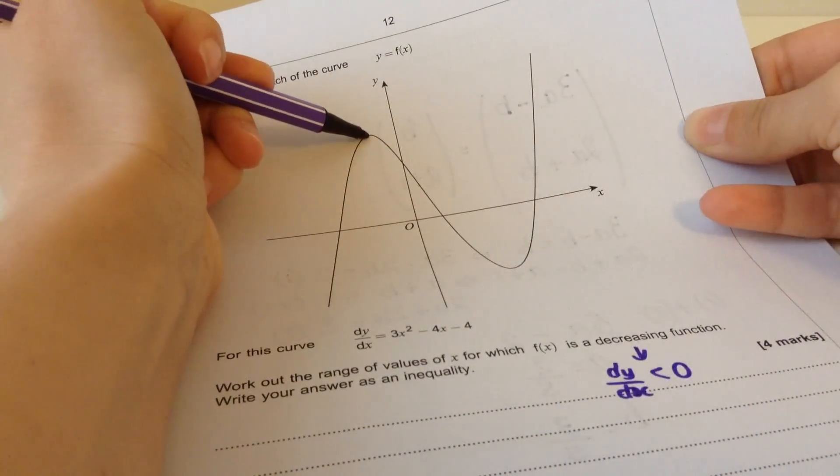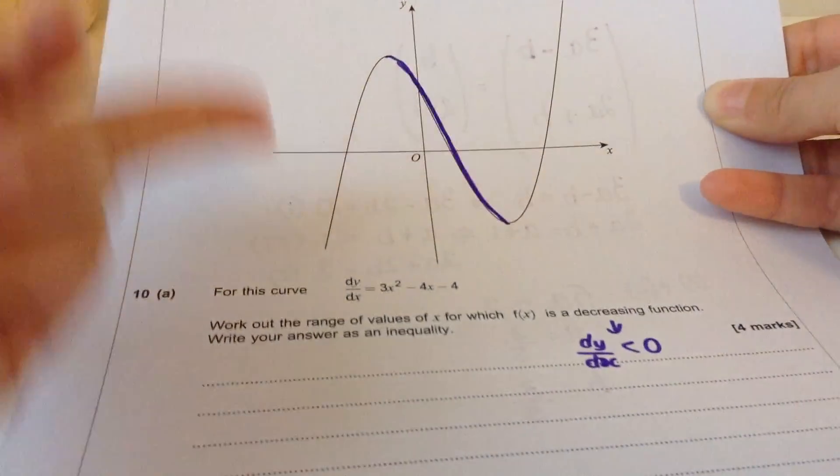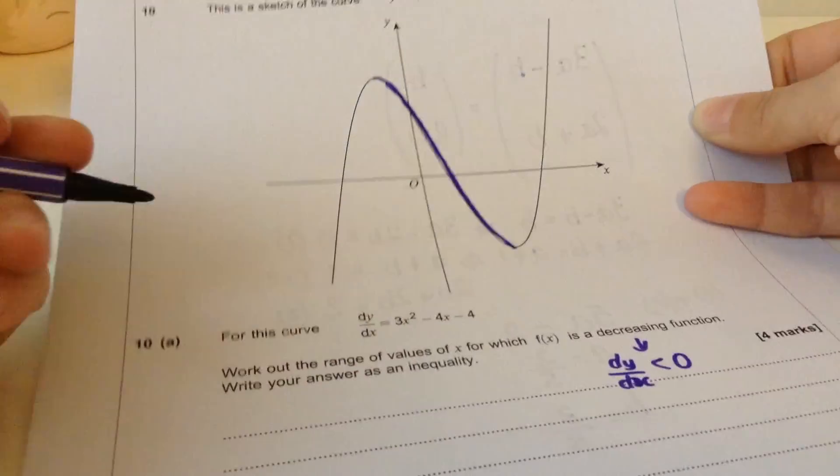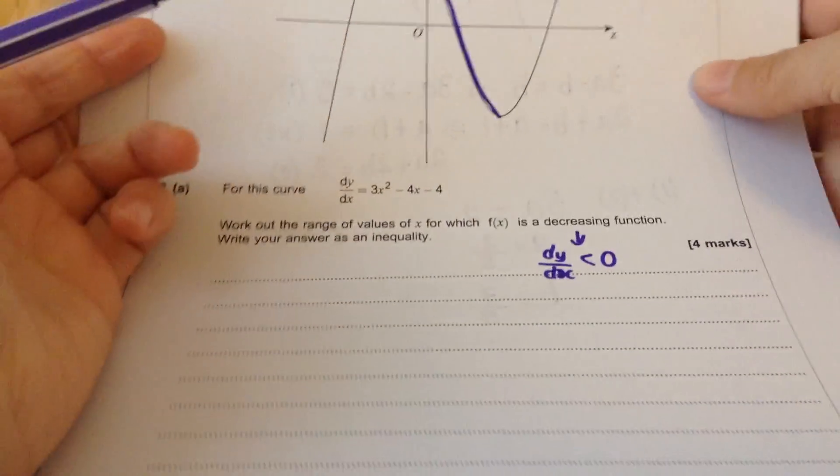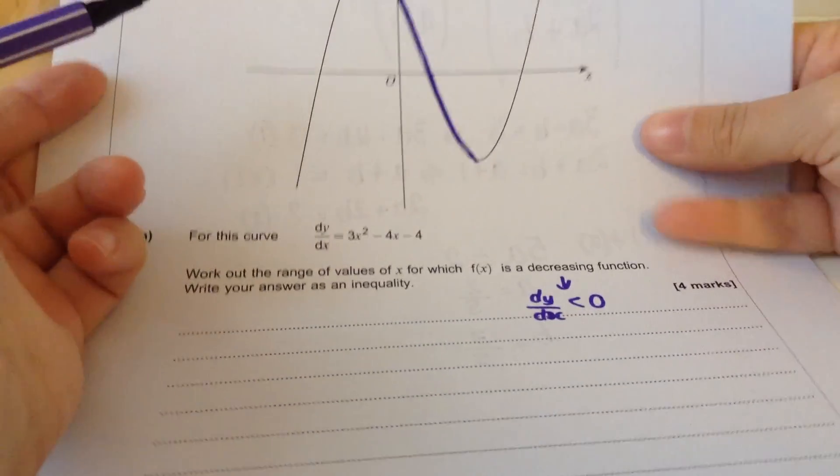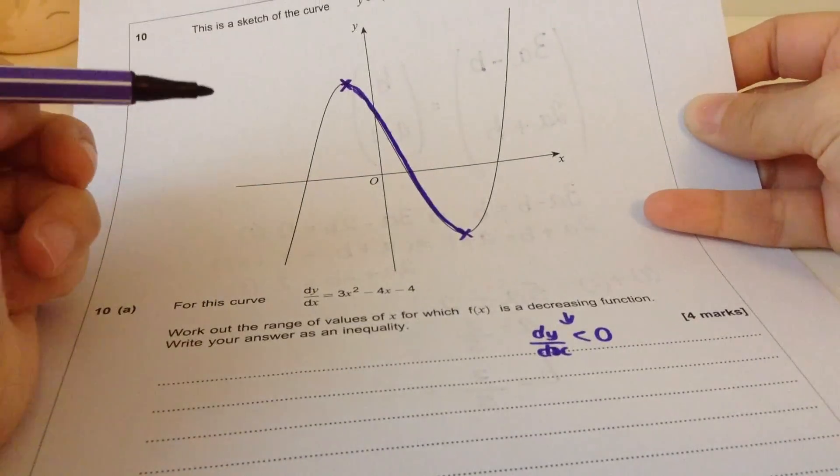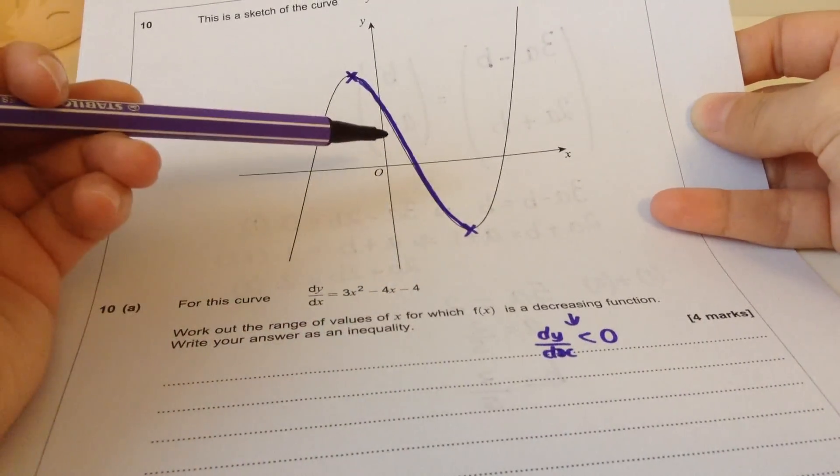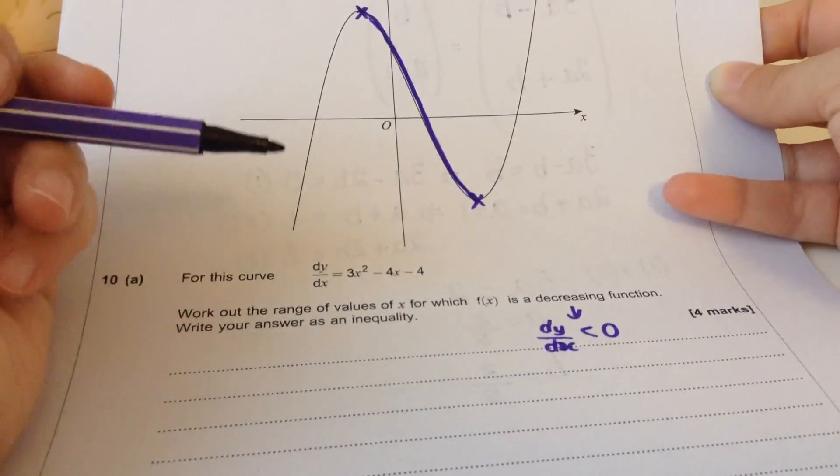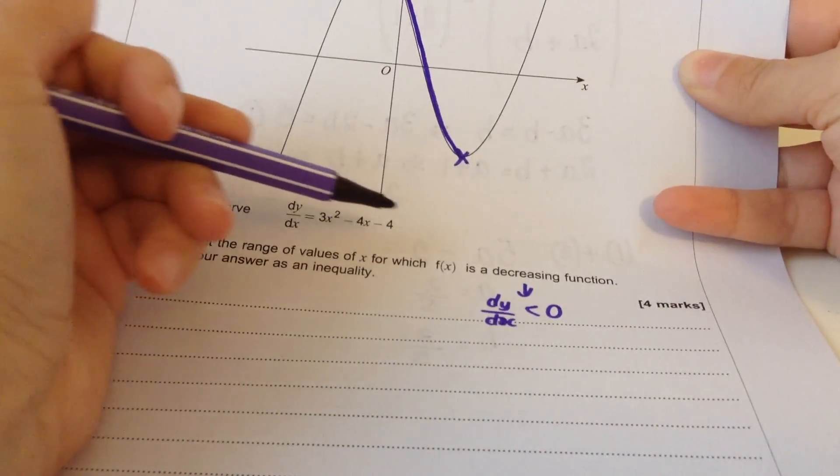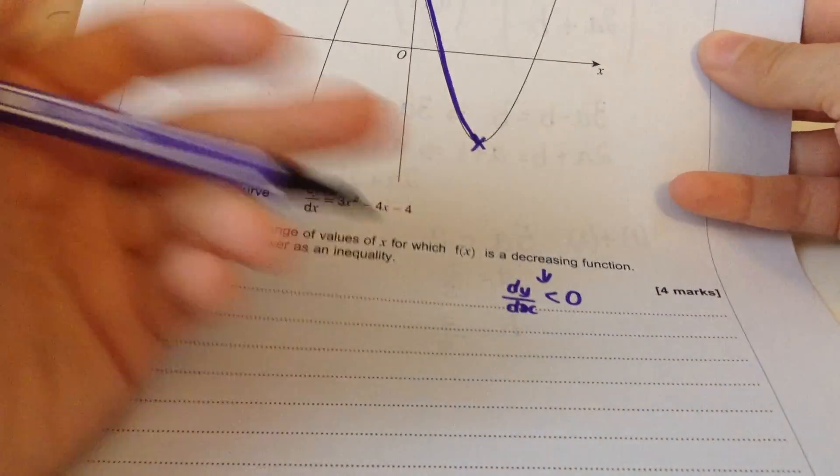Decreasing function means that dy by dx is negative. Decreasing means that the gradient is negative, it's sloping downwards. It's this bit going down. So I know it's going to be between two points, a sandwich. I could solve this quadratic as an inequality and write less than zero.